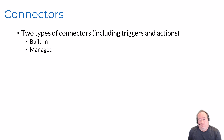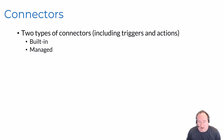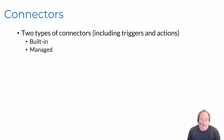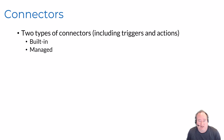Now as we dive into connectors, let's talk about the two different main types of connectors. Inside each connector you have a collection of triggers and actions - each connector is essentially a component around triggers and actions for that connector. The two core types are built-in connectors and managed connectors, which are Microsoft managed connectors.